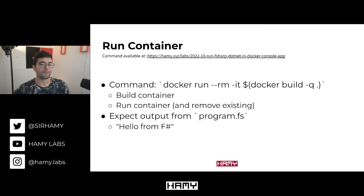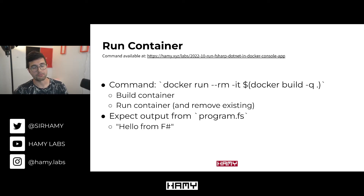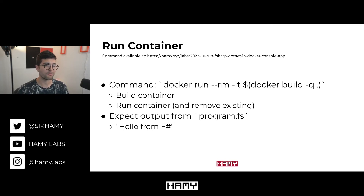Now that we have our full project and Dockerfile defined, we need to run the container. The command I recommend does two things: first, it builds the container without tags, which we don't need to worry about right now. Then it takes the hash from the build and passes it as a parameter to `docker run`. The `--rm` flag removes any container that might exist afterward, so we're not polluting our local system with unused containers. The `-it` flag isn't strictly necessary here, but it's useful if you want an interactive shell for a console application.